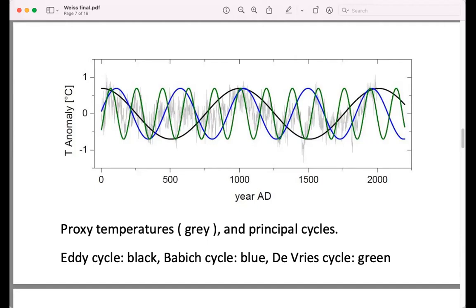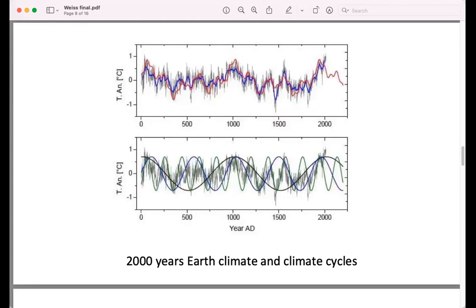So you'll see roughly at age zero, age 1000, and age 2000, the maximum of the black, blue, and green cycles at the same time. So they add to make a particularly warm climate. The three main cycles, which you can see here on the bottom, you add them and you get the red in the graph on the top.